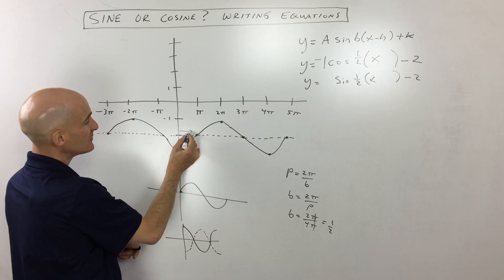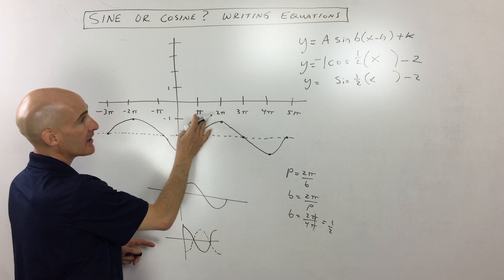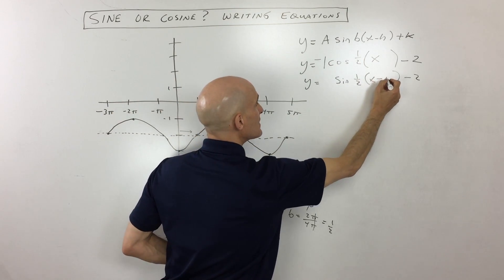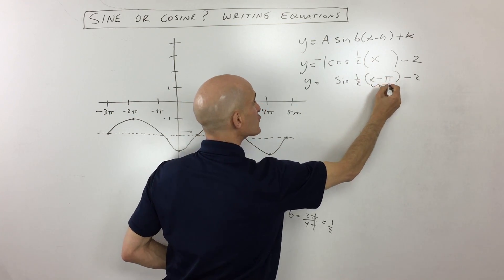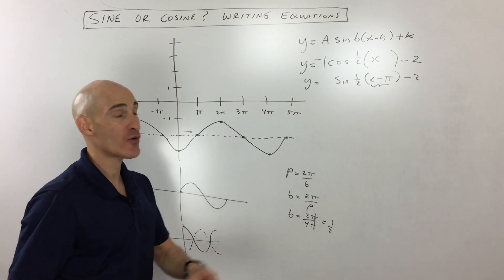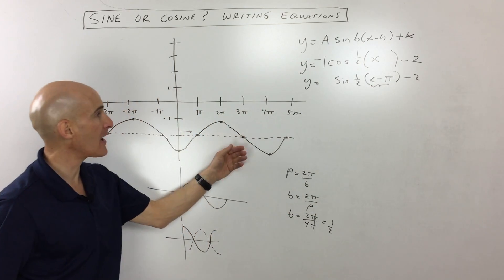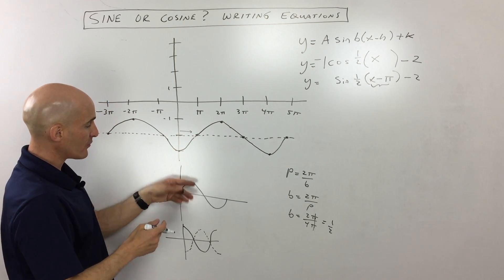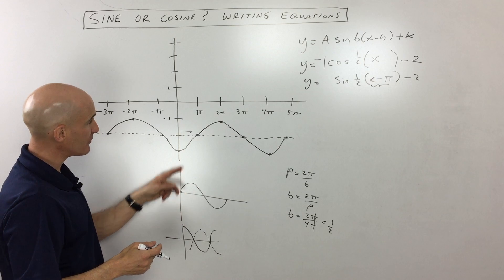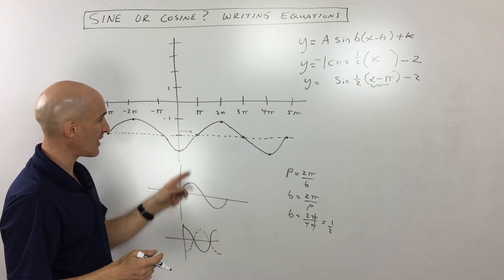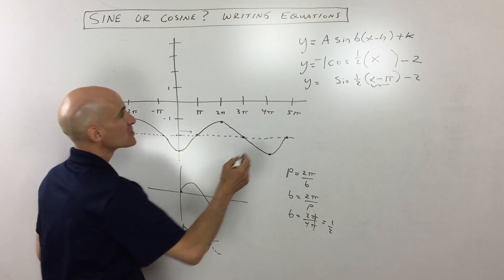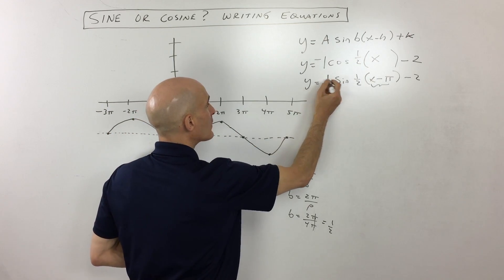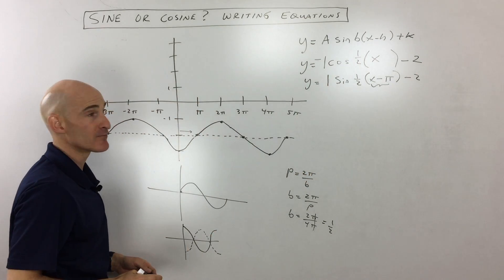So when we shift to the right, that's going to be minus pi. Remember the one that's grouped with the x has the opposite effect on the graph. Minus pi is actually shifting right pi, plus pi is shifting left pi. And then the other question is, has it been reflected or not? Well, this one hasn't been reflected, you can see it's the same shape as this graph here, it's just being shifted right. So that means the amplitude is just going to be one.